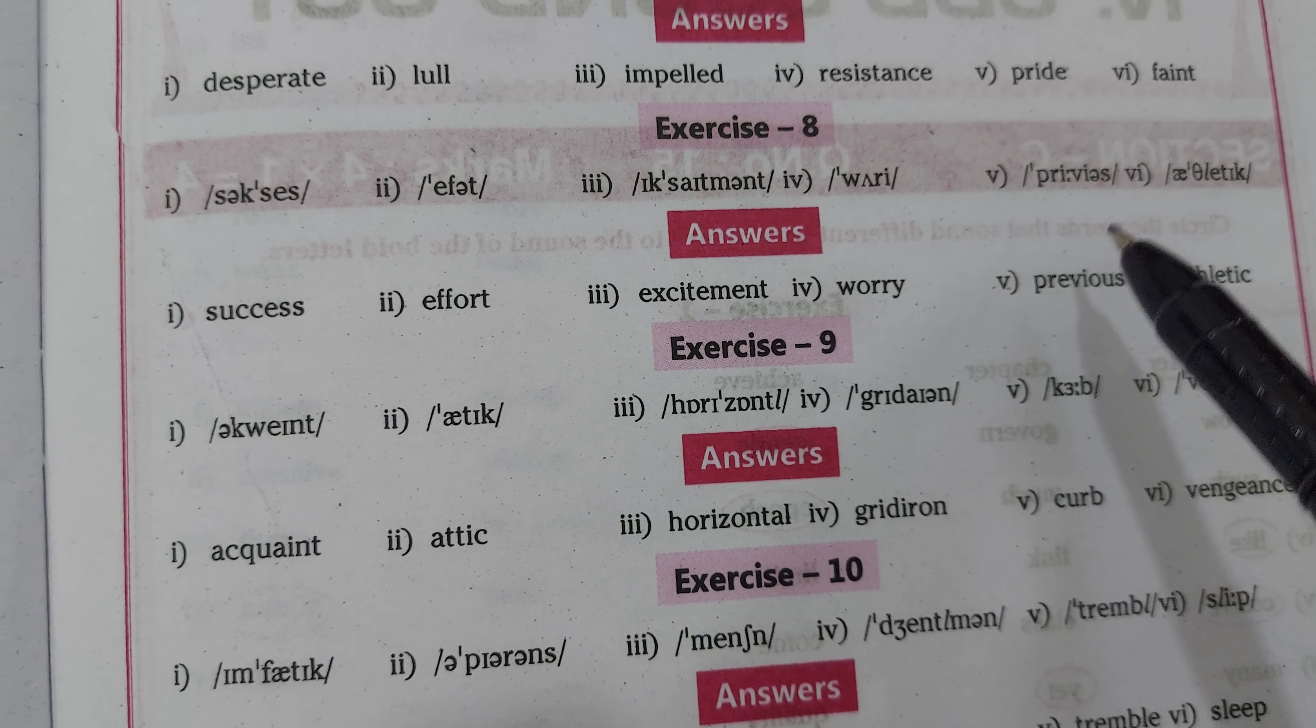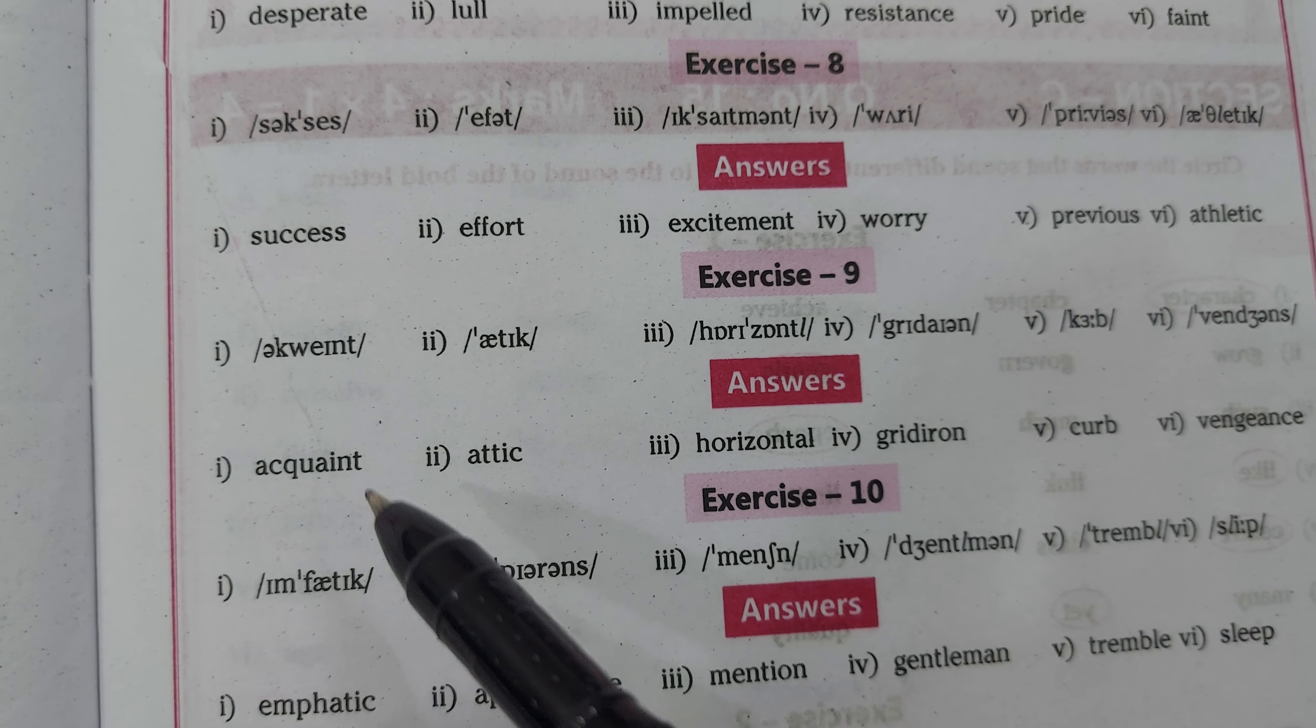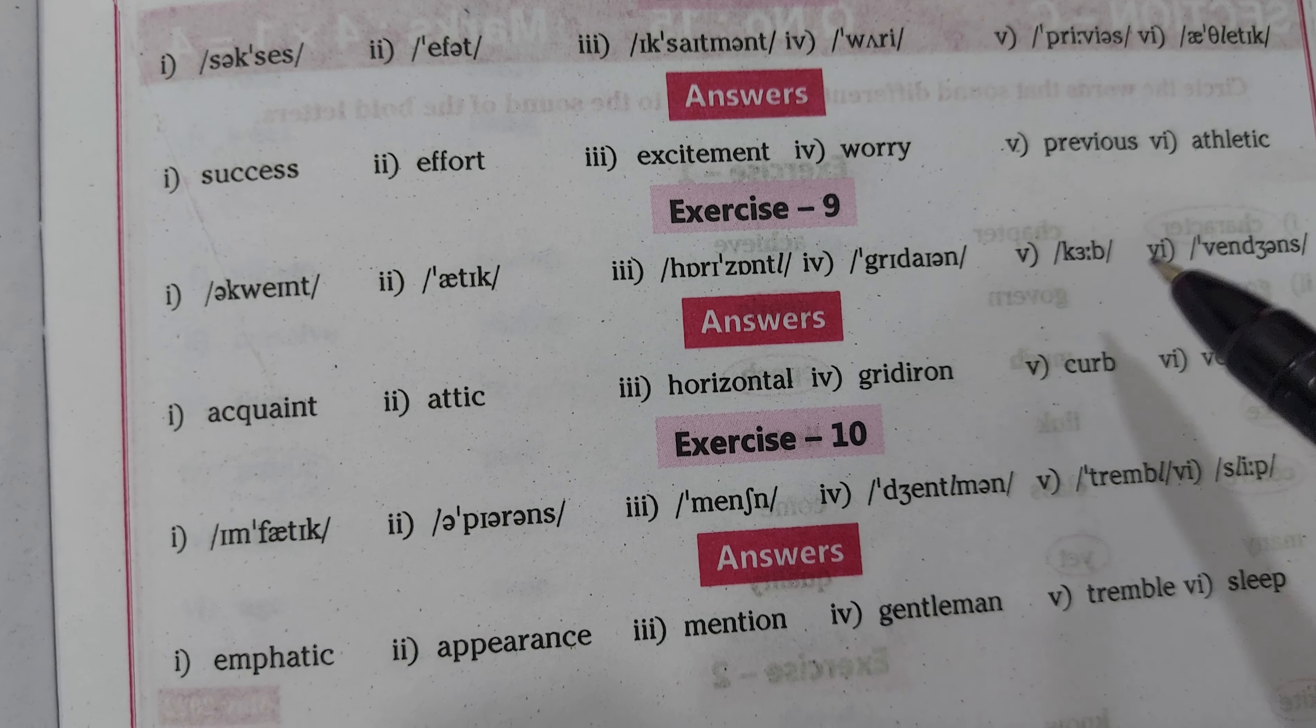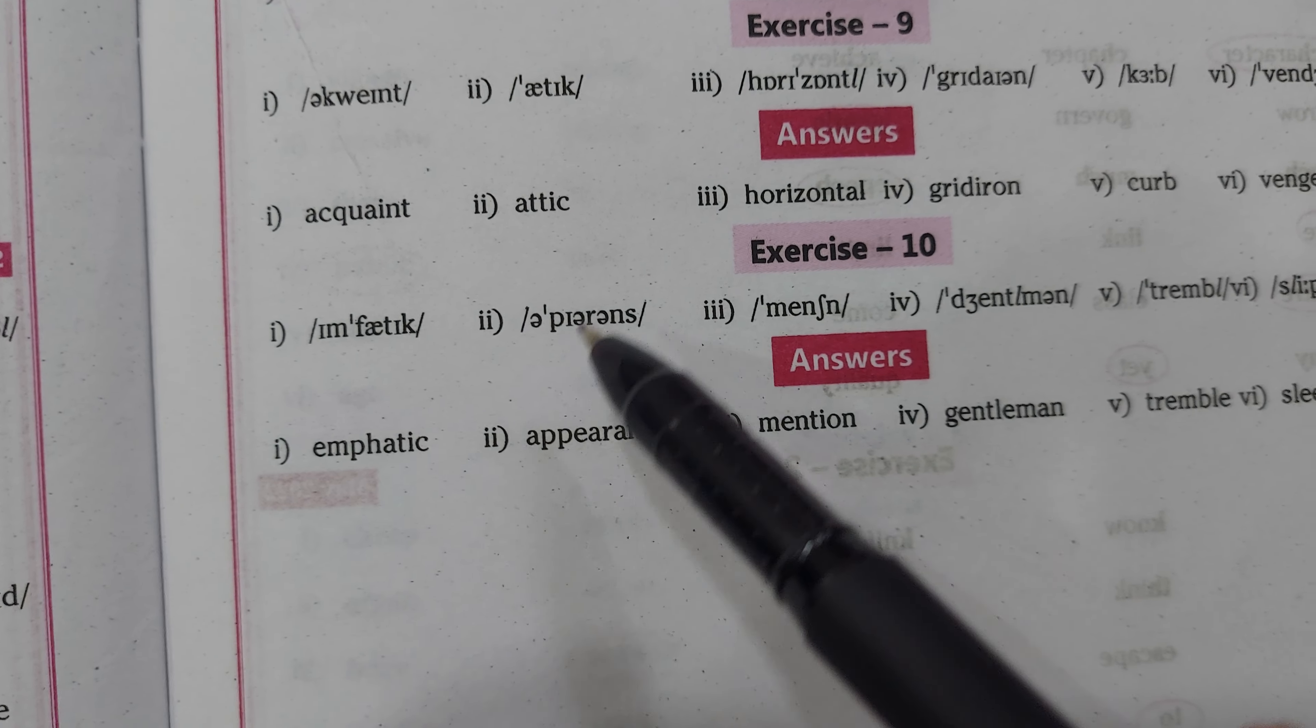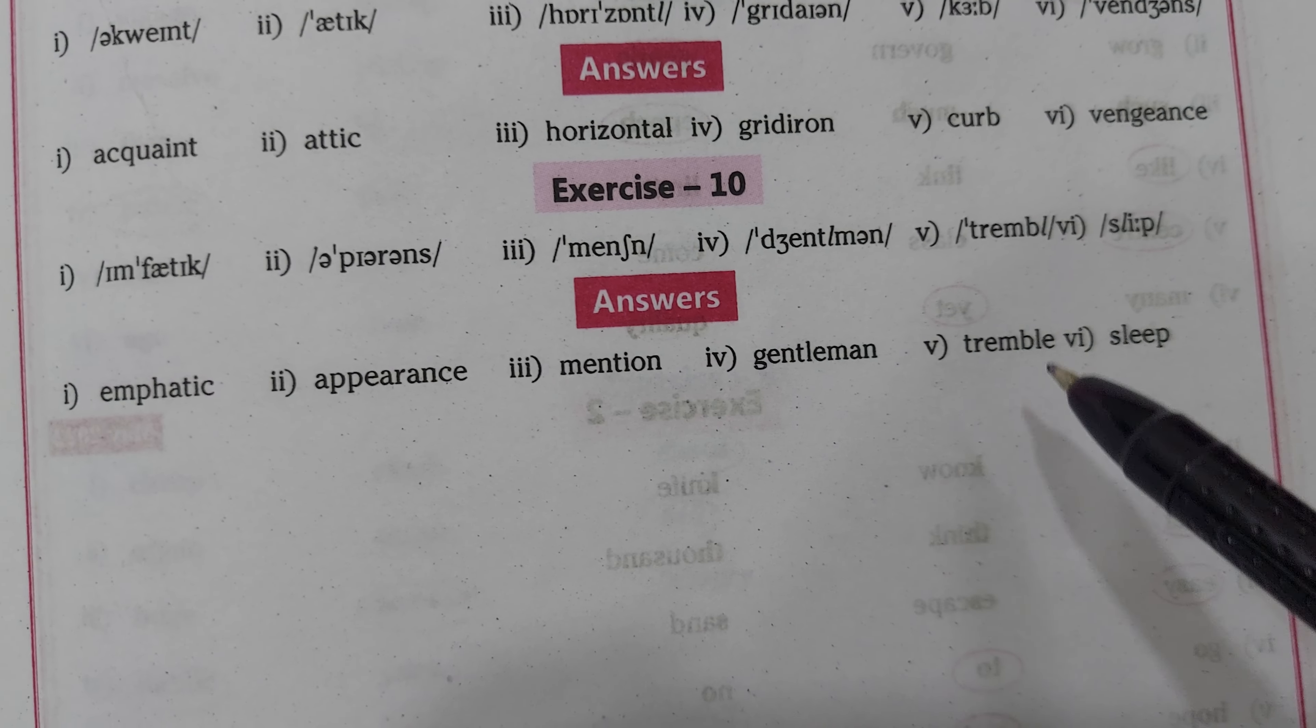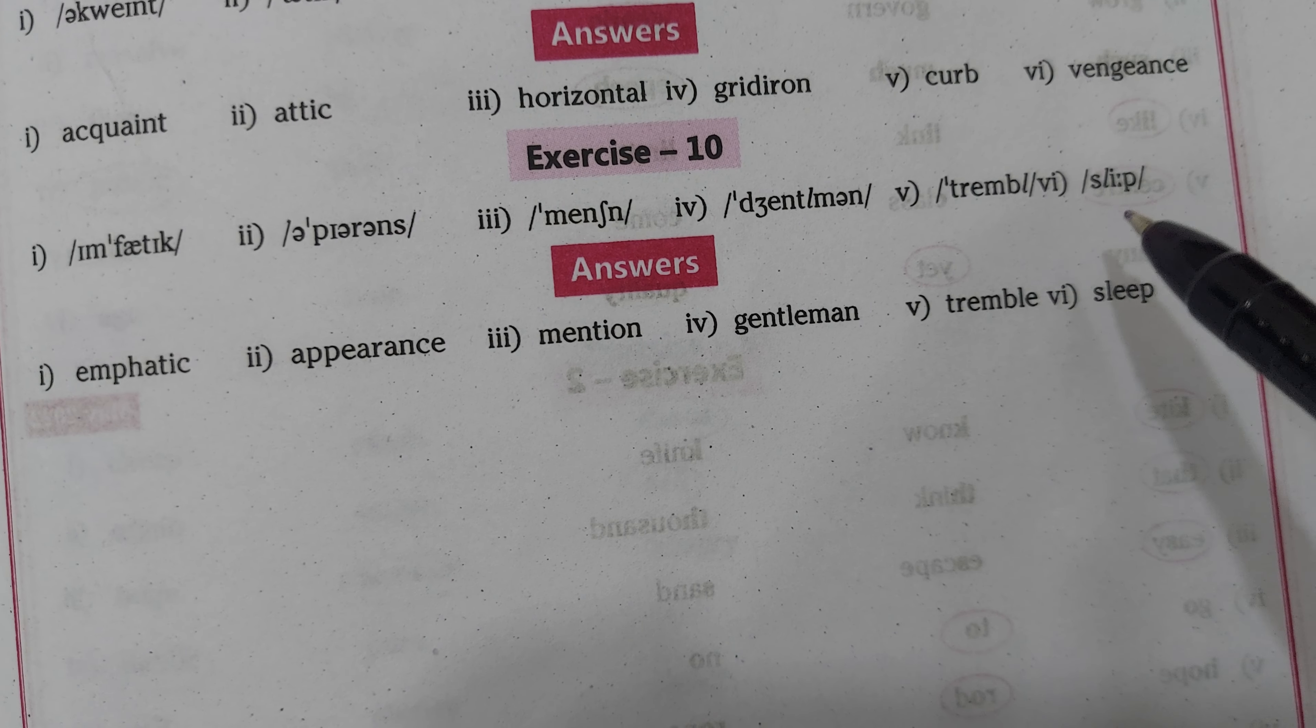Next set: acquaint, attic, horizontal, gridiron, curb, vengeance. Okay, last set: emphatic, appearance, mansion, gentleman, tremble, sleep. Not sleep, sleep—two dots are there, long sleep.